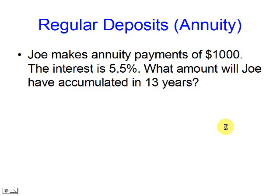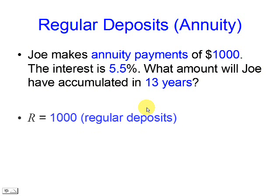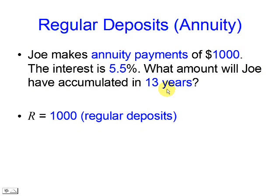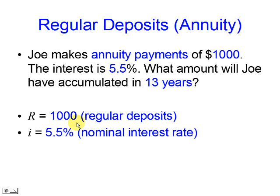This is another example. We make annuity payments of a thousand dollars. The interest rate is 5.5%. How much are we going to get after 13 years?